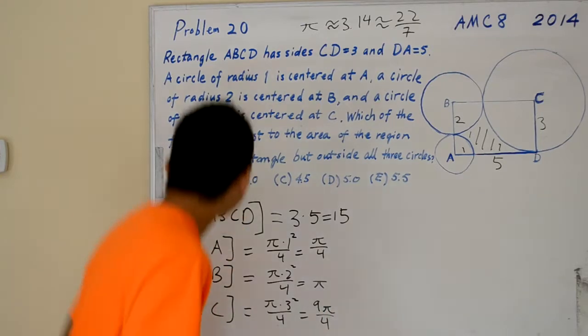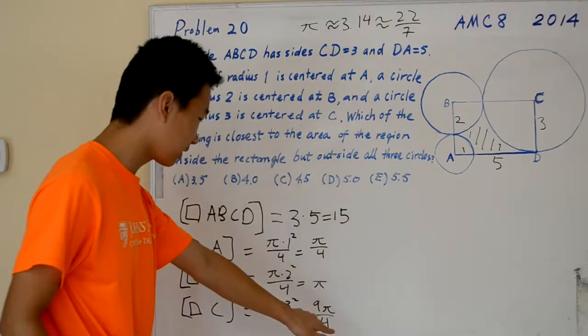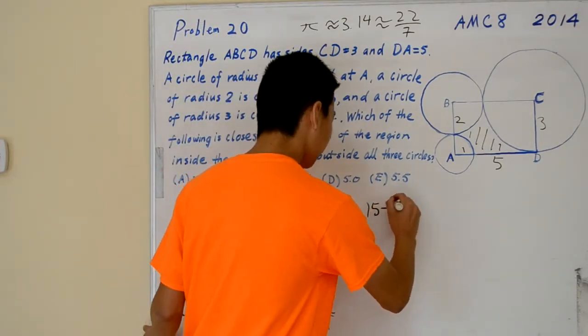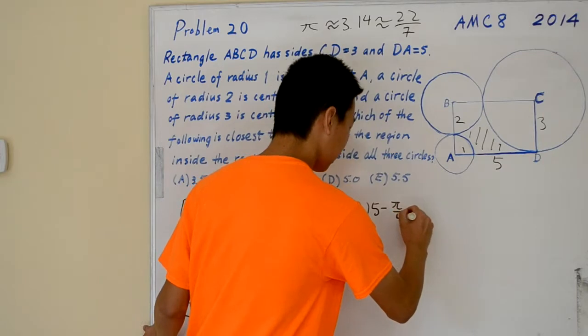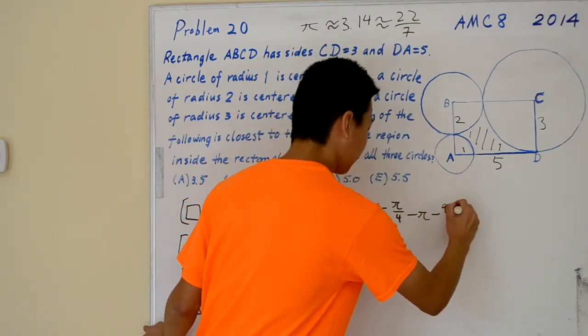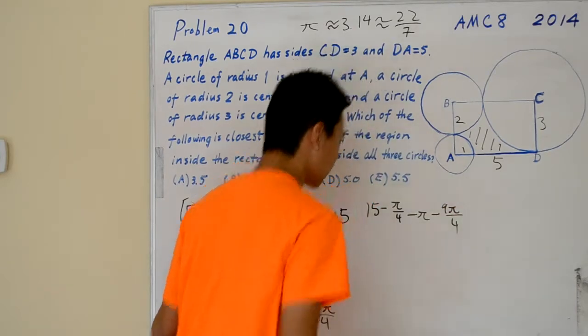Now we'll take 15 and subtract these areas from it. That's 15 minus pi over 4 minus pi minus 9 pi over 4, and then we simplify.